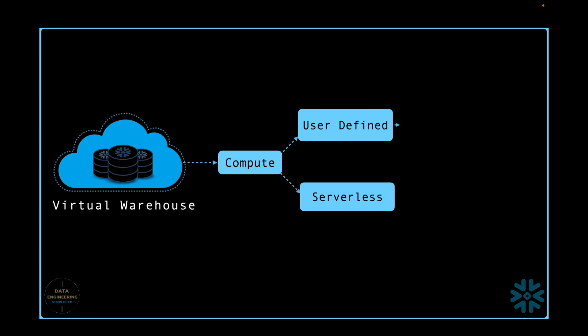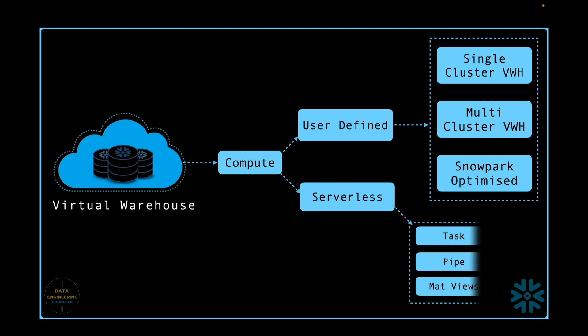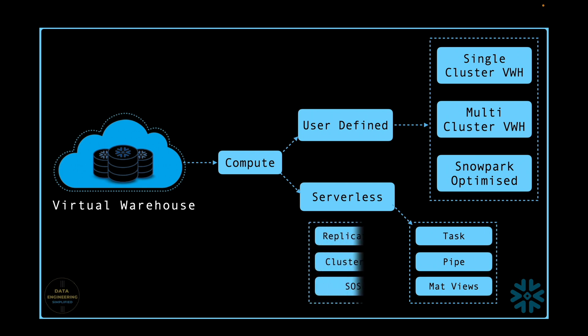Within user-defined compute, it can be further classified as single-cluster compute, multi-cluster compute, and snowpack-optimized compute. When it comes to serverless, you as a data engineer don't have much choice to configure — it is automatically provisioned by Snowflake based on your declaration and scales in and out by Snowflake's cloud service layer as per the workload demand. If you are running a task, using a pipe object to copy data, or creating materialized views that refresh automatically, all these objects use serverless compute provided by Snowflake.